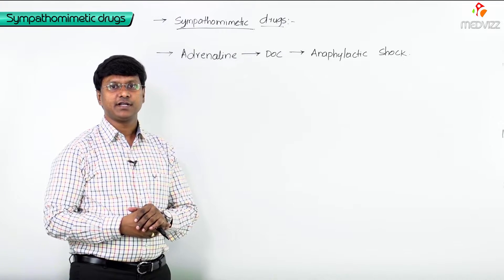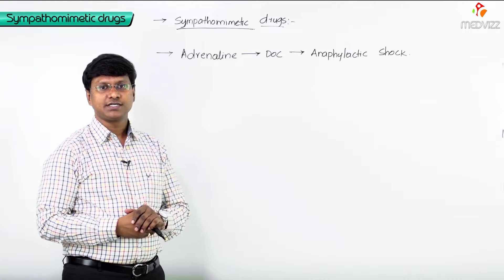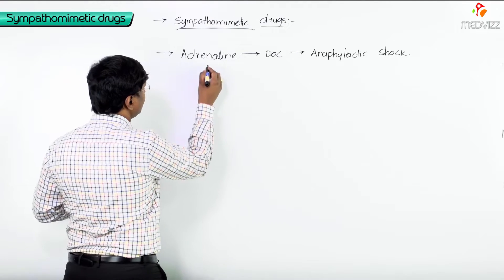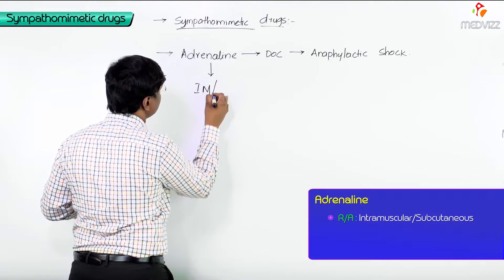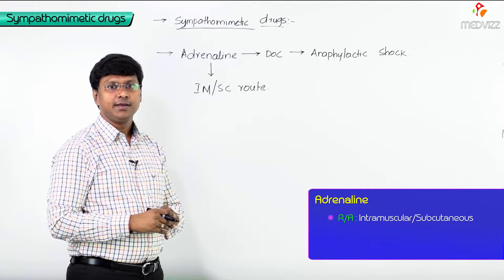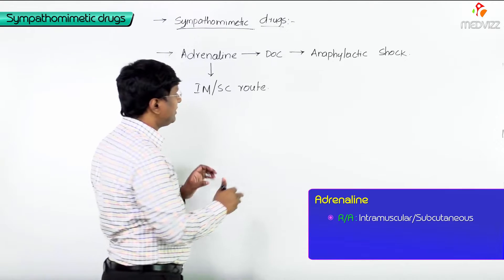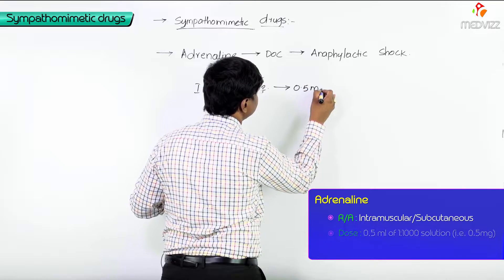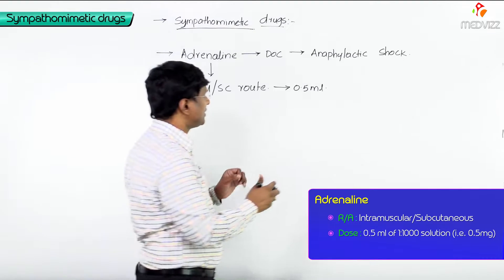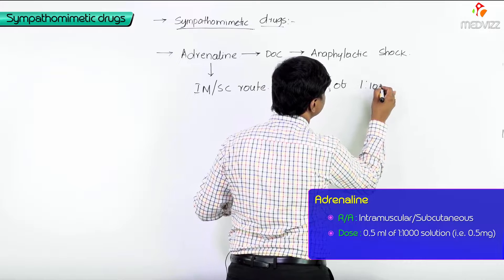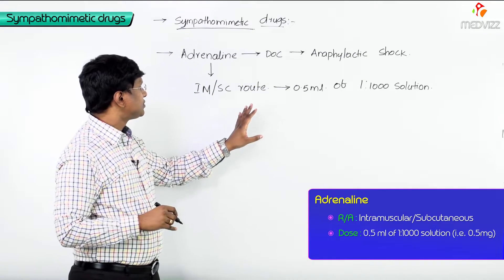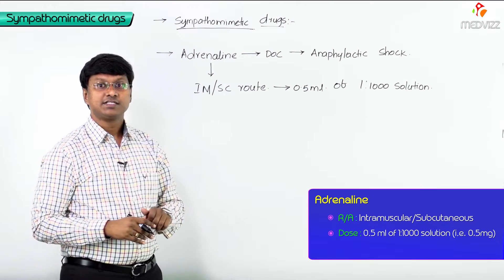Adrenaline is the drug of choice for anaphylactic shock. The dosage and route of administration: when giving adrenaline via intramuscular or subcutaneous route, 0.5 ml of a 1:1000 solution is given — that is around 0.5 mg.